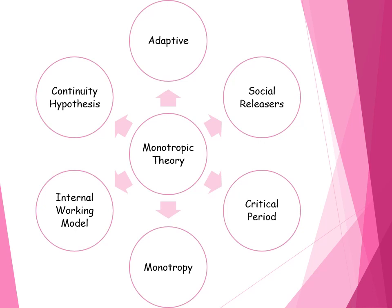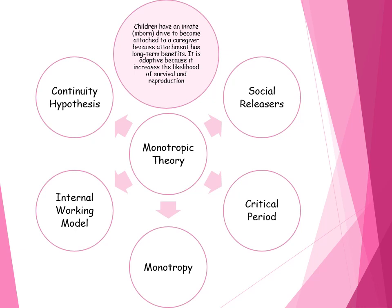The key concepts are that it's adaptive, there are social releasers, there is a critical period, monotropy, an internal working model, and a continuity hypothesis. It's adaptive because children have an innate drive to form an attachment to a caregiver because it has long-term benefits - it will increase the chances of their survival and therefore in turn increases the chances of later reproductive success.